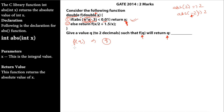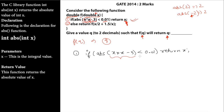We need ABS(X * X - 3) to be less than 0.01. Note that X * X is X squared. If you give a negative number, for example -1, then -1 multiplied by -1 gives 1. So squaring always produces a positive number regardless of sign.